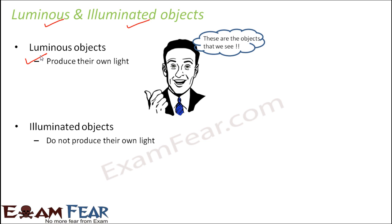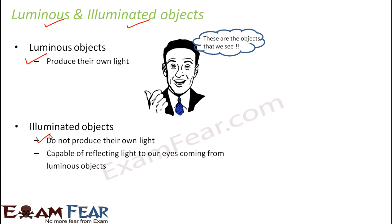On the other hand, a lot of objects are not capable of producing their own light, but we are still able to see them. You might be thinking — if there is no light, how are we able to see them? What happens is, these objects are not capable of producing light, but they are capable of reflecting light to our eyes, which is coming from the luminous objects. This part is very, very important. The light coming from luminous objects and falling on these objects is reflected by these objects to our eyes.